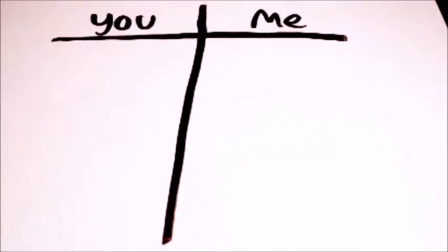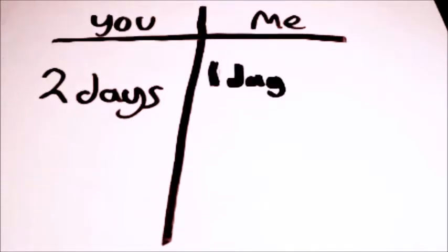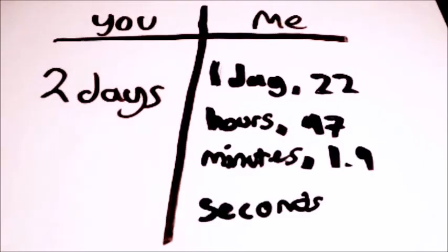But if we were to draw a graph like this, and do it the other way around, you being on Earth for two days, like this, I would have aged less. One day, 22 hours, 47 minutes, and 1.9 seconds.